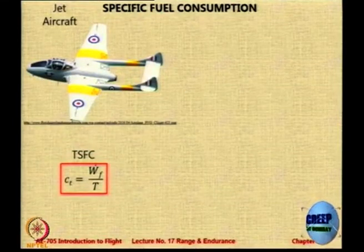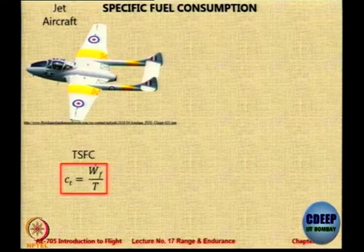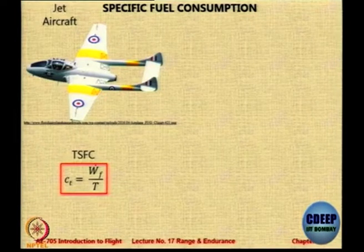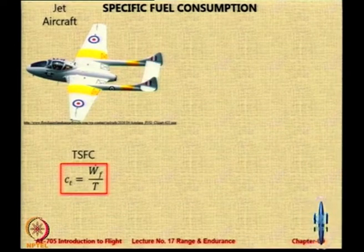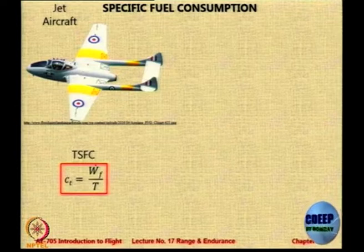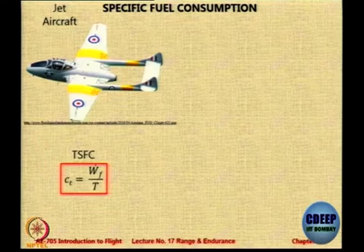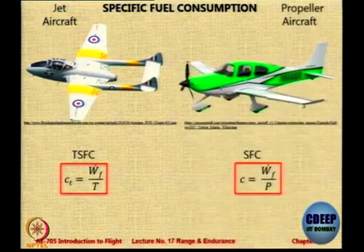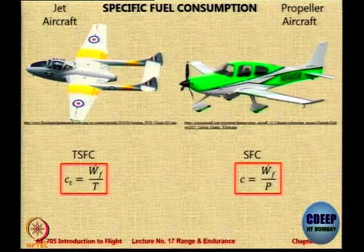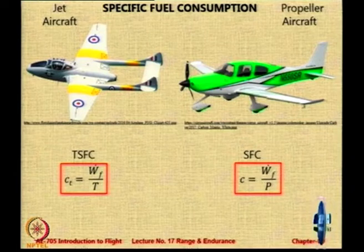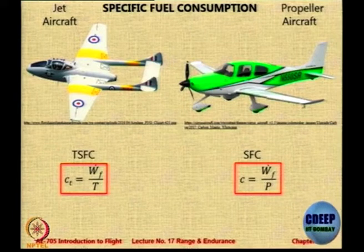For jet engine aircraft we talk about TSFC, or the thrust specific fuel consumption, called C subscript T, which is the fuel flow W-dot-F — fuel flow per unit thrust produced, or amount of fuel consumed over amount of time per unit thrust. For propeller aircraft we are concerned about power, so we define SFC as the fuel flow per unit power produced.